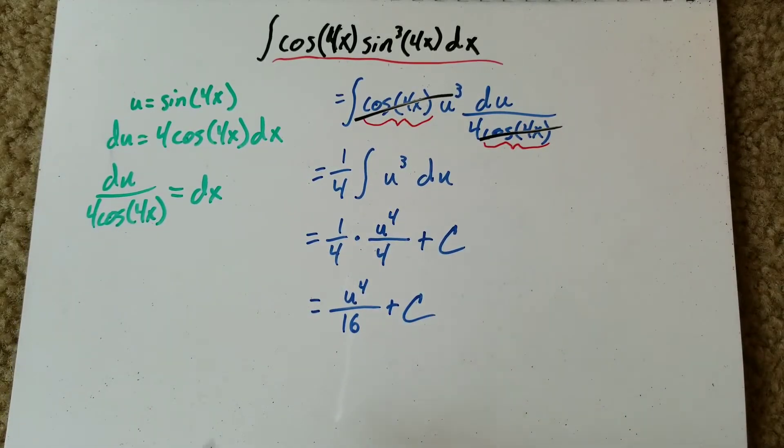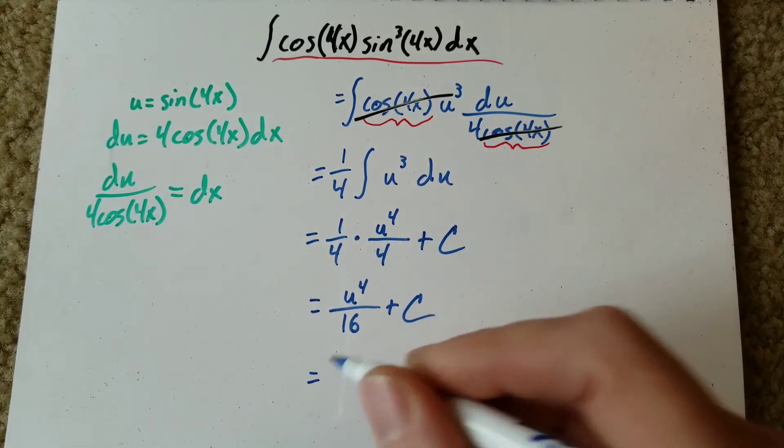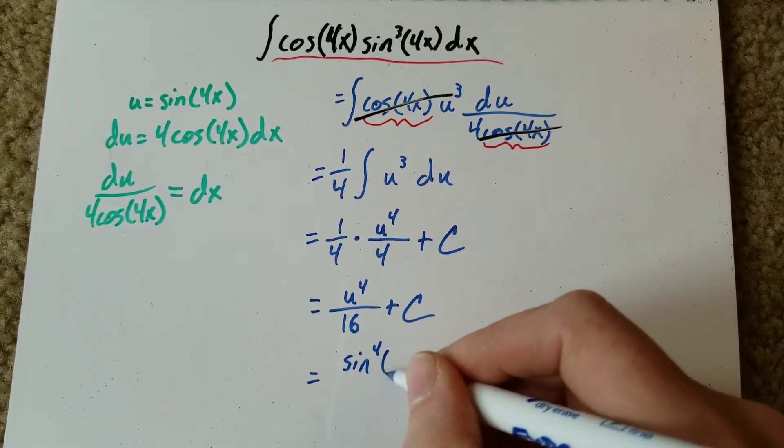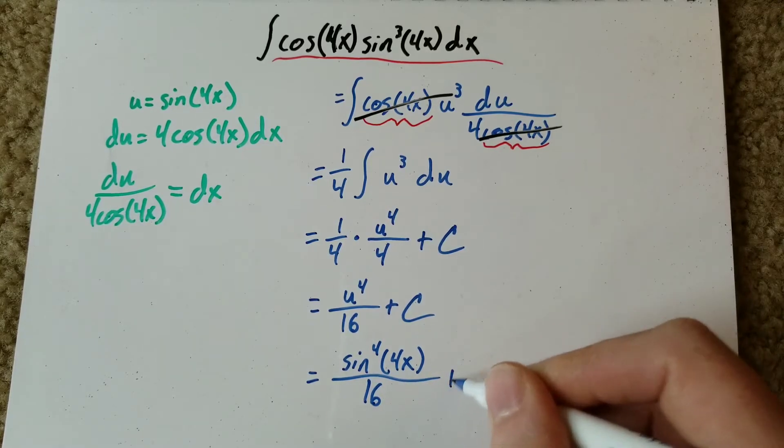And then our final step is just replacing our u with our original function. So that equals sine to the 4 of 4x over 16 plus C.